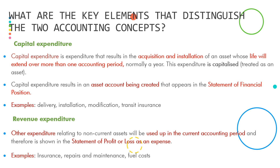If you get one of these as an explained type question, a breakdown of how to answer it has been provided - key words are in bold and in red. With any short answer question you will get marked on accounting terminology. For capital expenditure, your answer should include key words such as 'acquisition and installation of an asset whose life will extend over more than one accounting period.' This expenditure is capitalized - that is a very important word - and it is treated as an asset, meaning that cost will actually add to the cost of that asset.